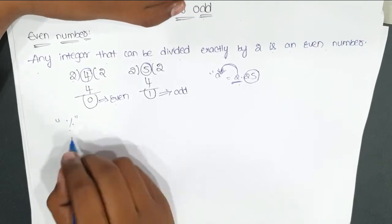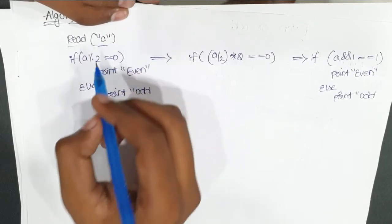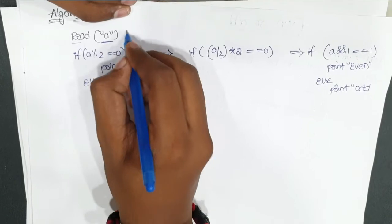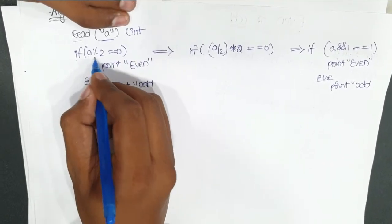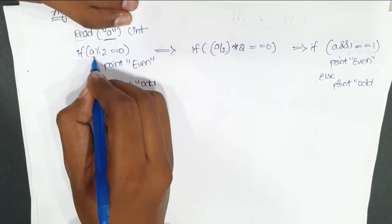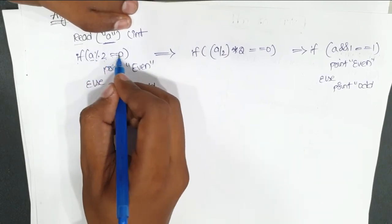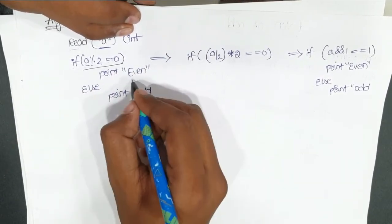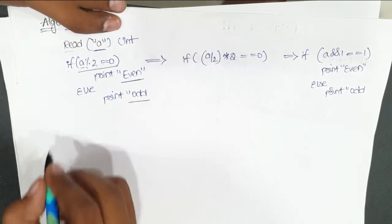Now we will build the algorithm. First we need to read a value. I declare a variable 'a' of type int. Then I write a condition: if a mod 2 equals 0, then it is an even number; else it is an odd number. I will write the examples I used earlier to verify this.